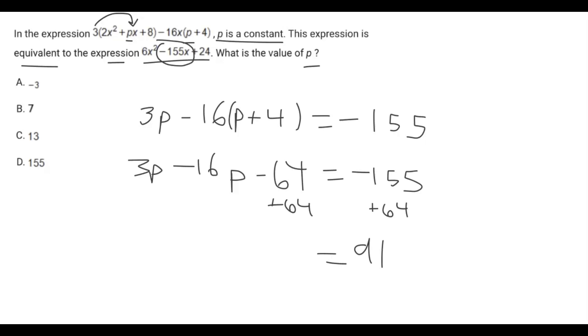Now we're left with 3p minus 16p on the left side, which gives us negative 13p. We can divide by negative 13.